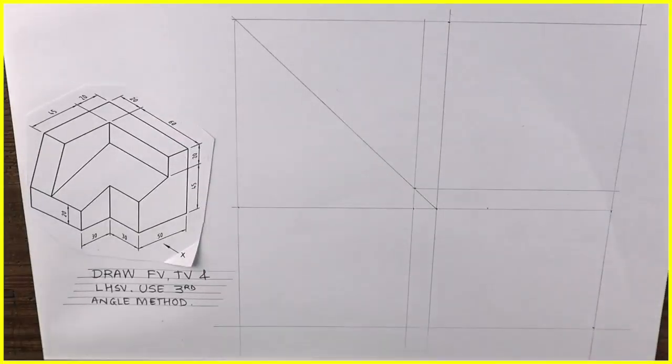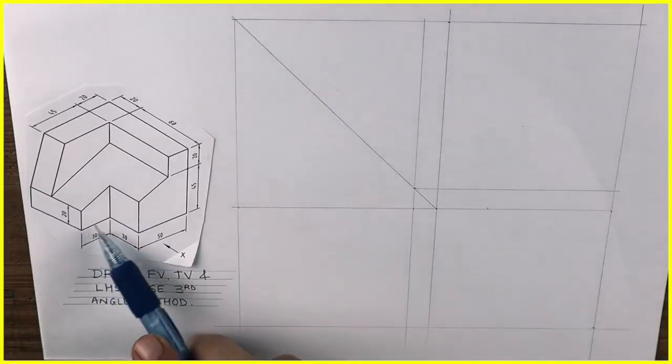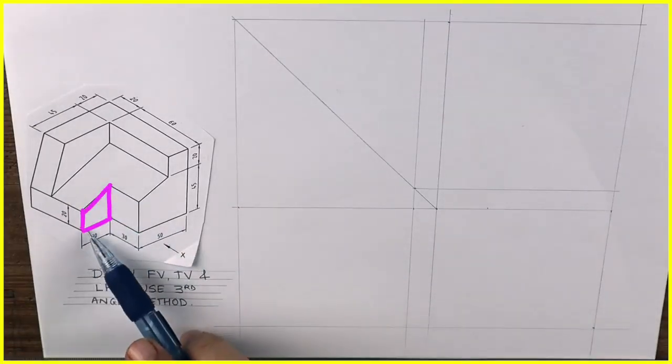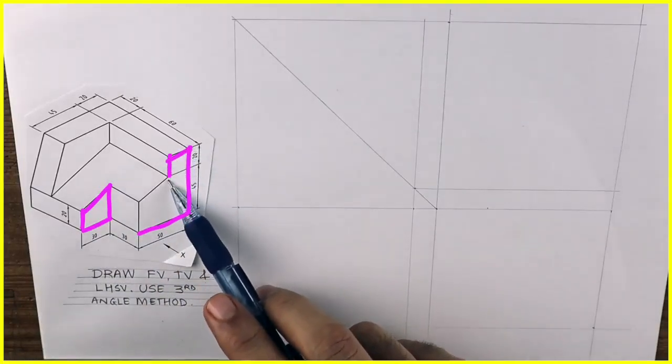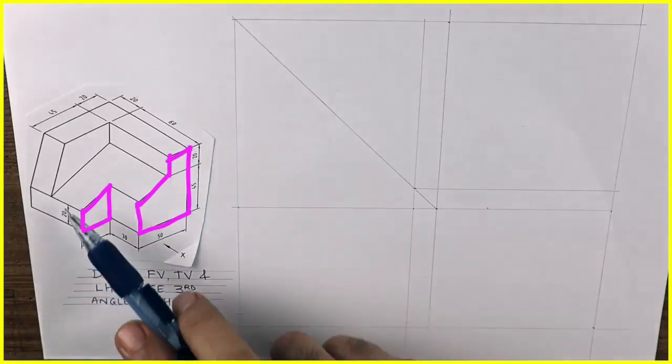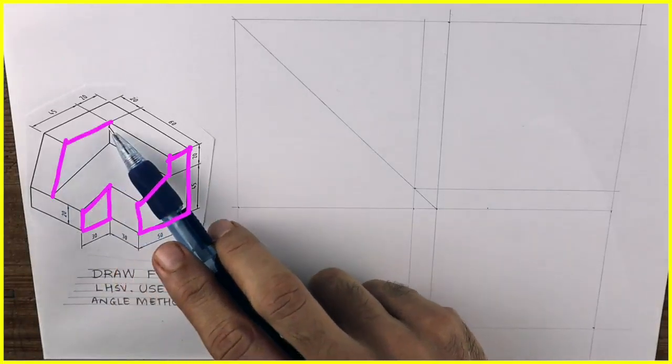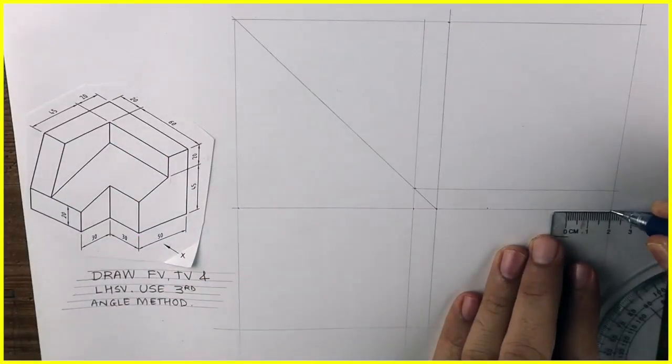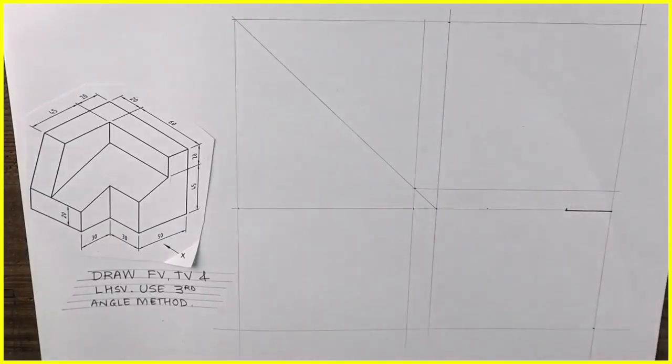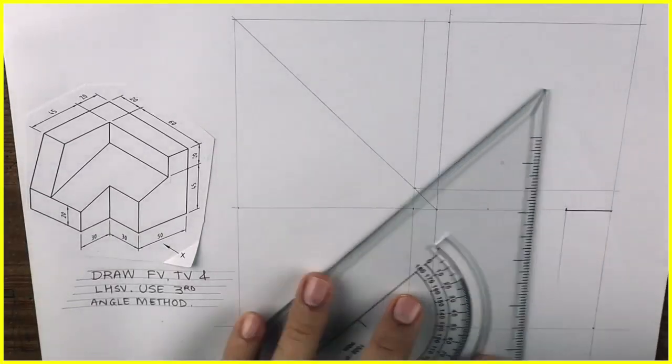First we will draw the layout for front view, top view, and left hand side view. After that in front view, when you see you'll see this part, then this part, then this slope. So we need to draw that slope first.